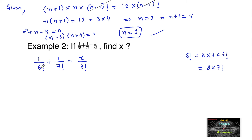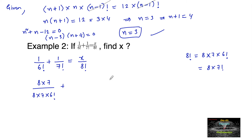For 1 upon 6 factorial, if we multiply and divide by 8 into 7, we get 8 into 7 in the numerator over 8 into 7 into 6 factorial in the denominator — multiplying and dividing for our convenience.